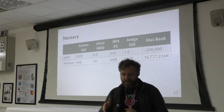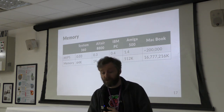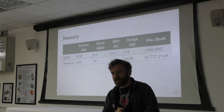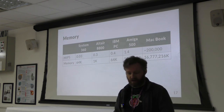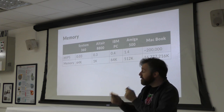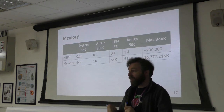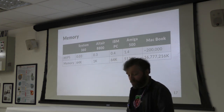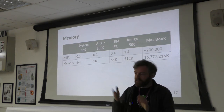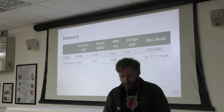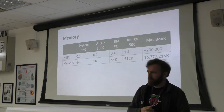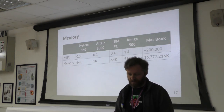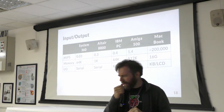Looking at memory: the System 360 typically came with 64K; the Altair had only 1K of RAM — though you needed two 4K upgrade cards to run BASIC. The original IBM PC had 64K as a normal level; the Amiga had 512K; and the MacBook has 16.8 million K of RAM, which isn't even considered a lot anymore — you can buy workstations with more.